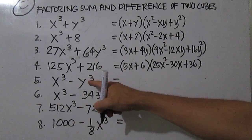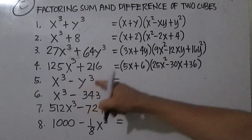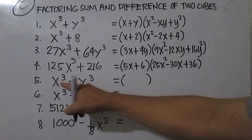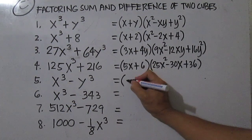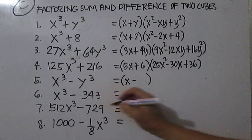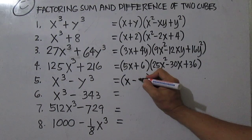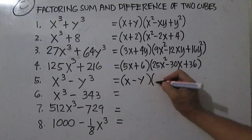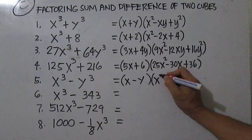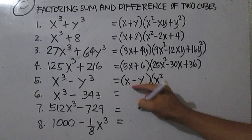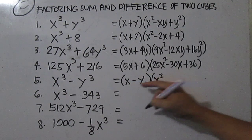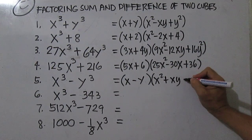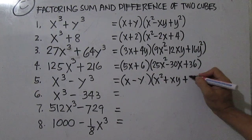Now we are going to factor the difference of two cubes. Take the cube root of the first term minus the cube root of the second term. From this factor, you square the first term, then write the opposite of the product of the first and second term, then square the second term.